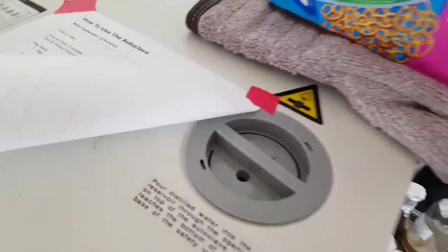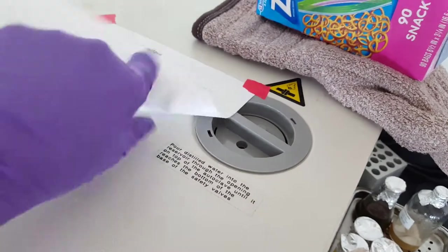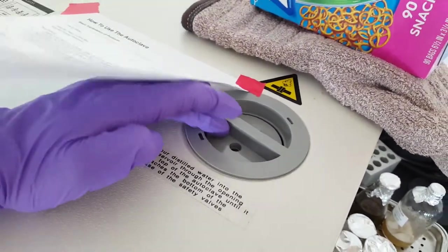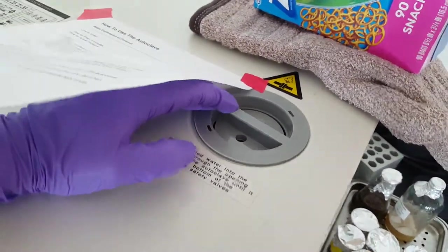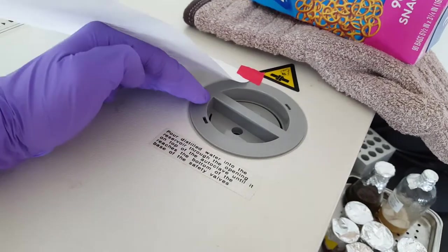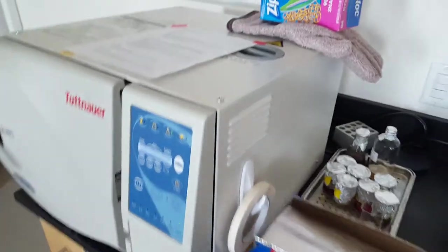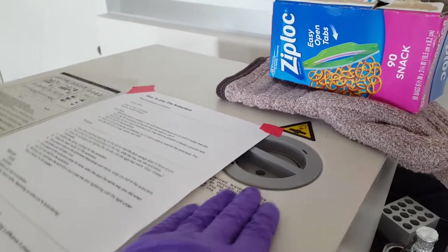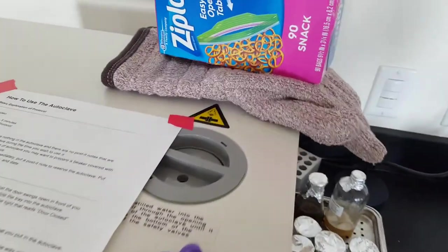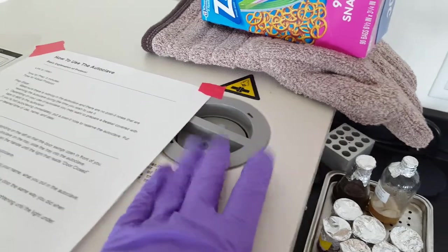So this right here is where you will pour distilled water in, but if you're using the autoclave, I wouldn't mess with this. This is also the air filter. I wouldn't mess with this. The protocol is right here. If there's a problem with the autoclave and it's not filling with water, then I would consult a teacher before dealing with that piece.